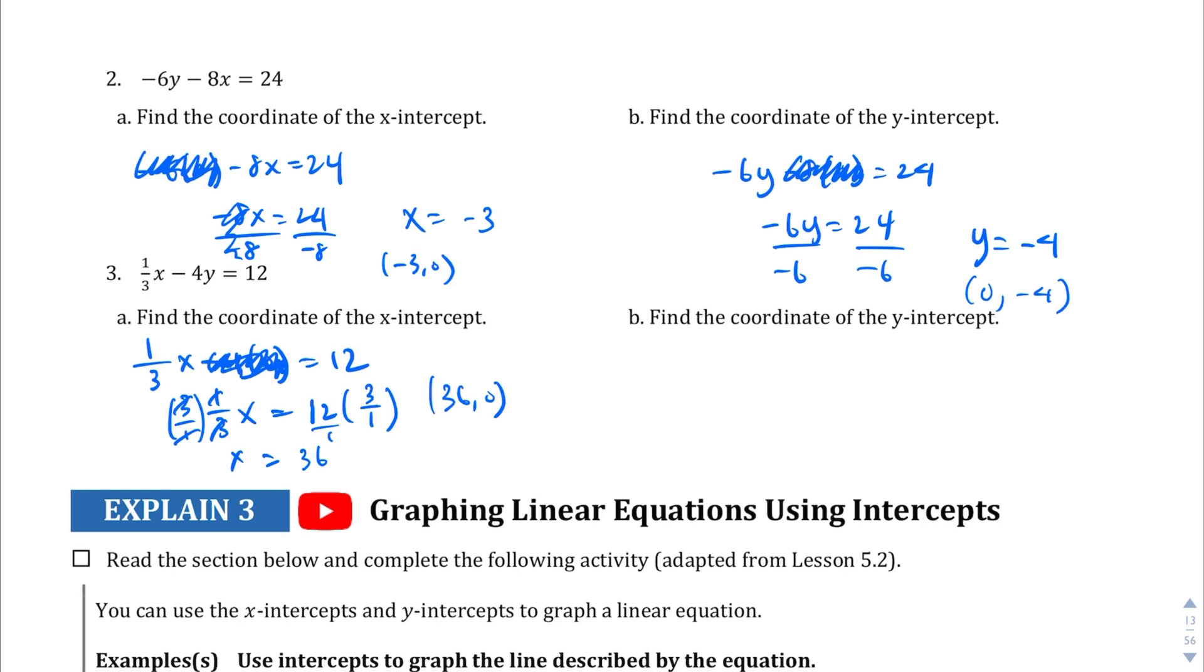Let's find the coordinate of the y-intercept. So we're going to make x equals 0. 1 third times 0 minus 4y equals 12. And for those of you fraction haters, this should make you excited that we'll just get rid of that fraction altogether. We have negative 4y equals 12. Divide both sides by the coefficient of negative 4. We should get y equals negative 3. And so the ordered pair in this case is going to be 0 comma negative 3.